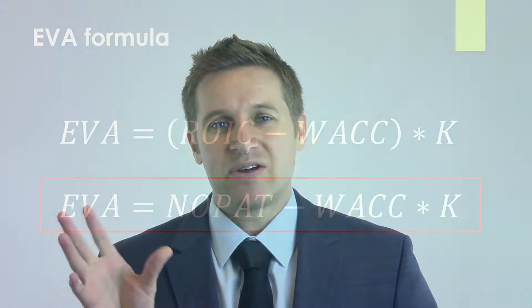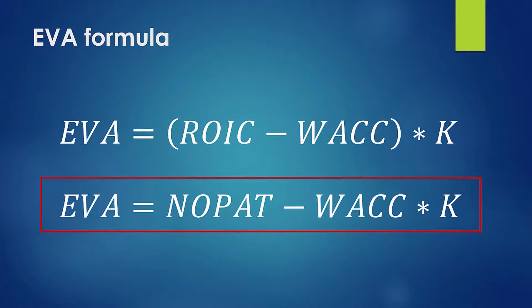The equation we talked about in the last video calculates EVA by calculating your total assets at risk — it gives you the actual dollar amount. The equation we're going to be talking about in this video works a little bit differently because it calculates EVA using percentages. And knowing the percentages is actually very useful.